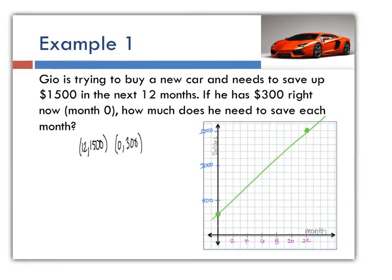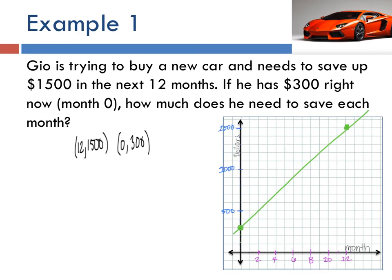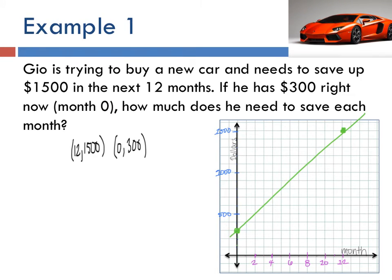There's actually two ways we can do this. I'm going to show it using the formula way. So we have two points: twelve comma fifteen hundred and zero comma three hundred. The way to figure that out, we've done this a lot of times already, is fifteen hundred minus three hundred over twelve minus zero, because remember we have those two points.